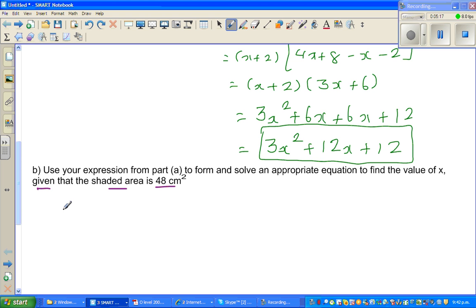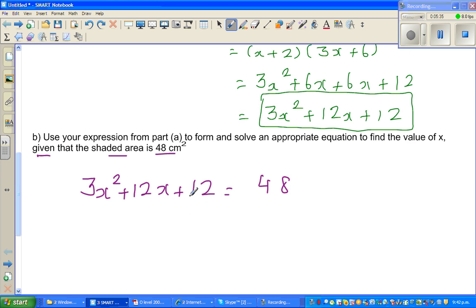So what they're saying is this area is equal to 48. So what should be the value of x? So I can say now, therefore, 3x² + 12x + 12 is equal to 48.